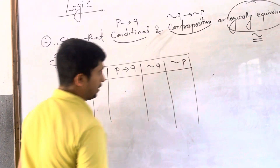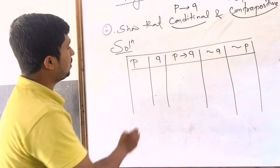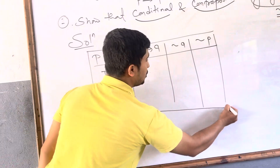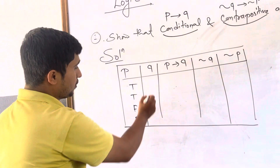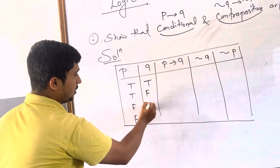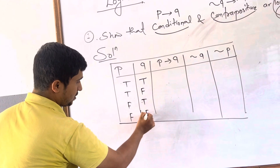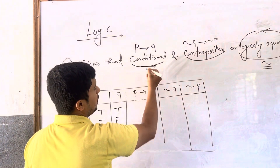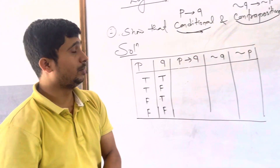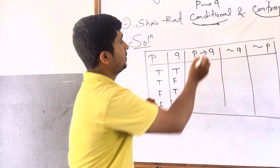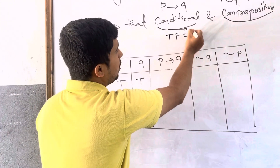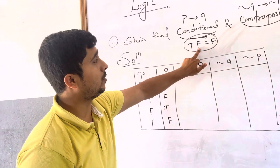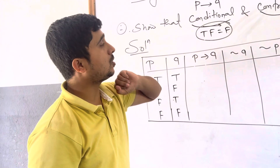There are two statements, P and Q, so how many rows do we have? Four rows. We write: True-True, True-False, False-True, False-False. Similarly for Q, write the four combinations. Now for P then Q, you have to know the truth value of the conditional.